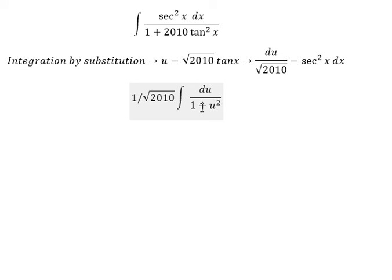Next, the integral of du over 1 plus u squared, you will get arctan of u. We put u equals square root two thousand and ten tan x, and we put C as the constant.